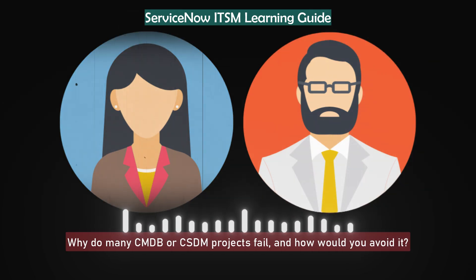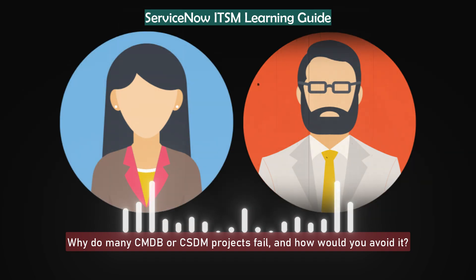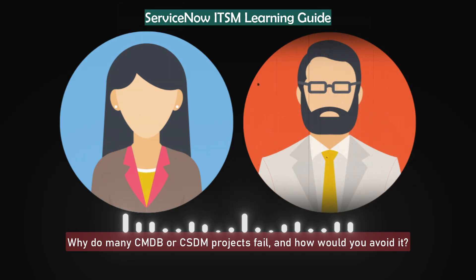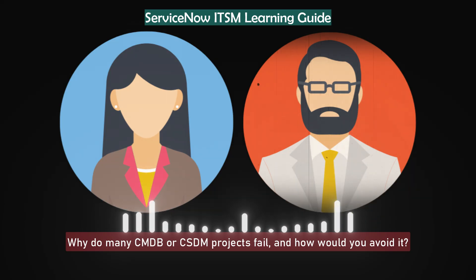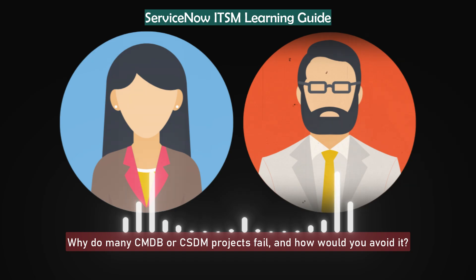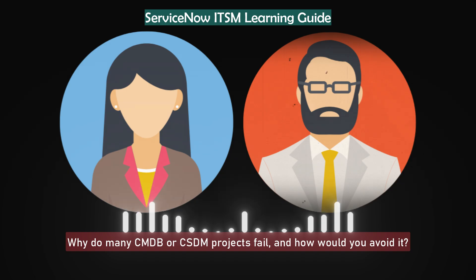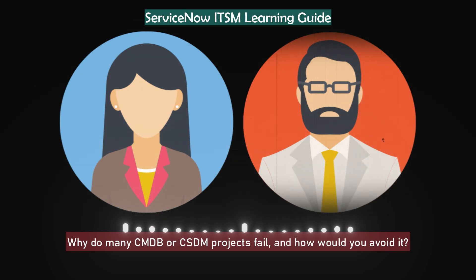Why do many CMDB or CSDM projects fail and how would you avoid it? Most CMDBs fail because people try to load everything without purpose. I always start small — pick one business service, define owners, and build relationships layer by layer. Automation helps but governance matters most. If ownership is not clear, data gets stale fast. I also tie CMDB outcomes to real use cases like impact analysis or change risk — that is how you build trust in the data.